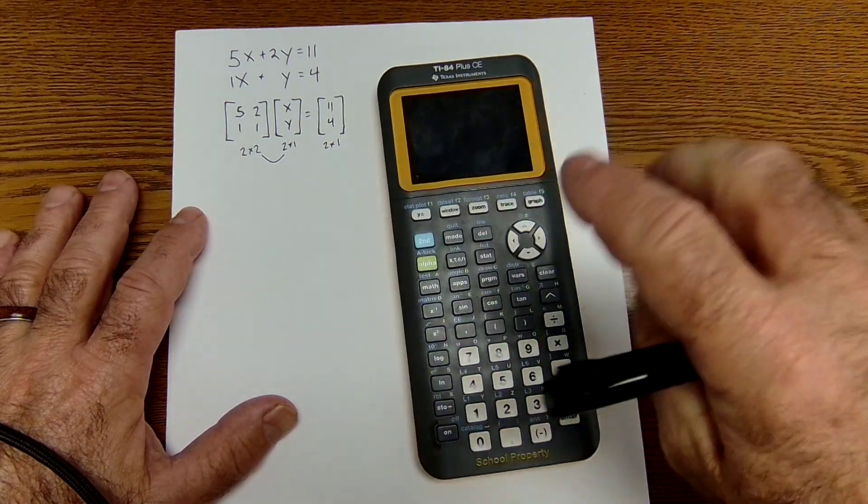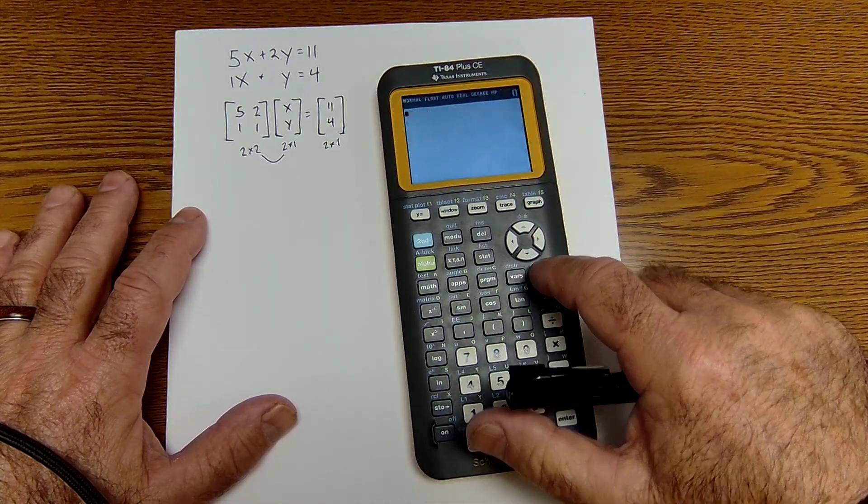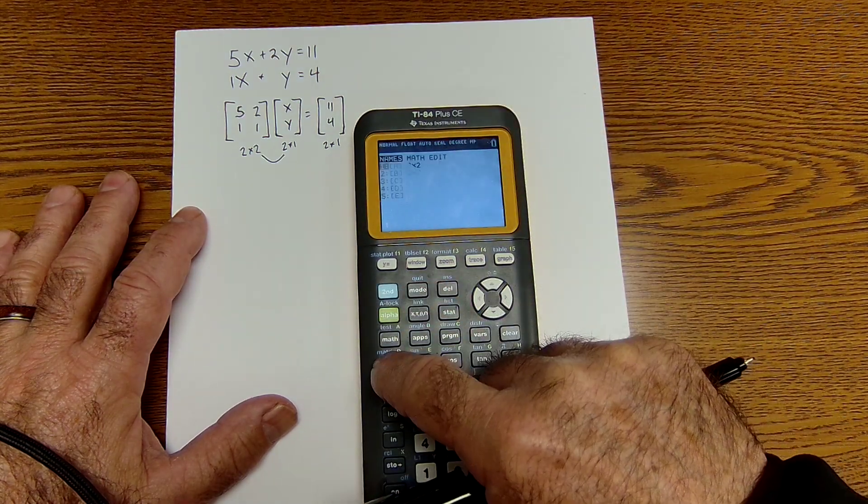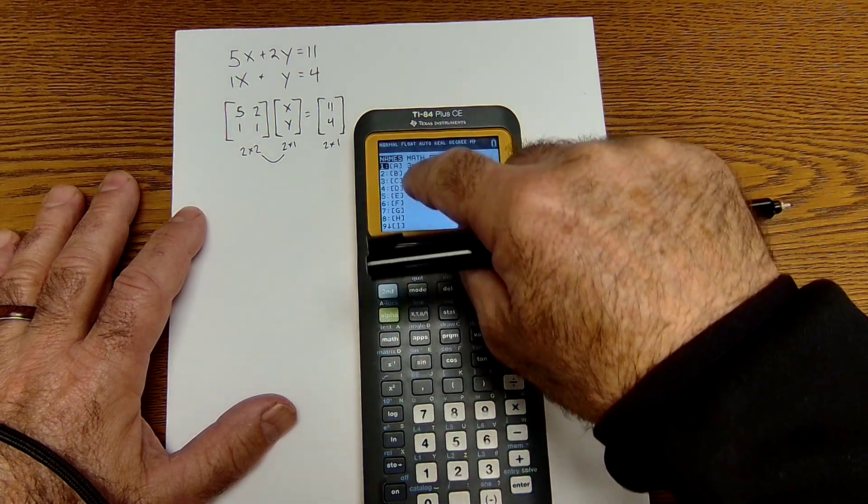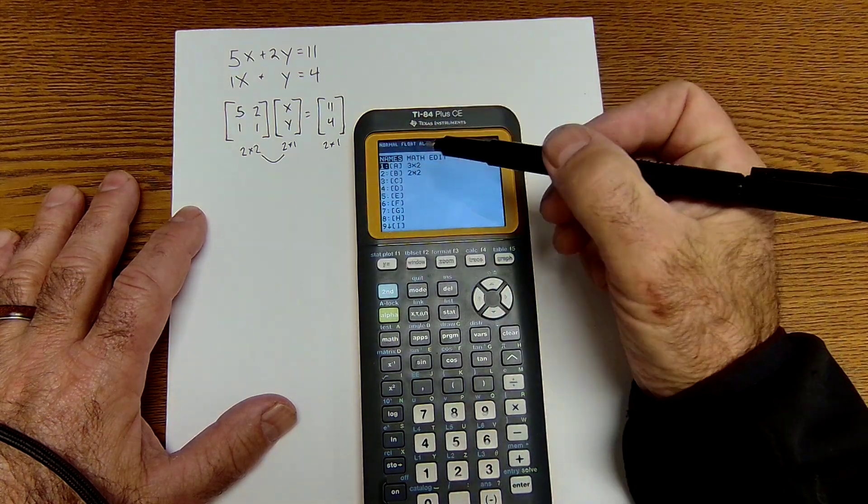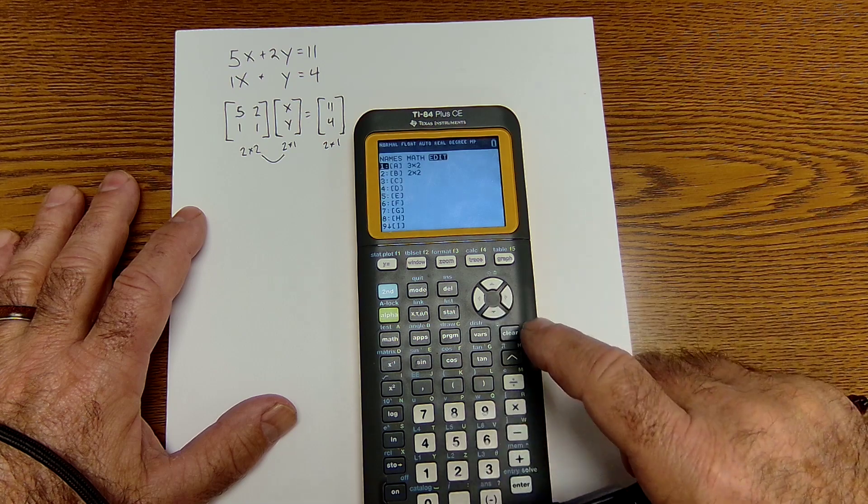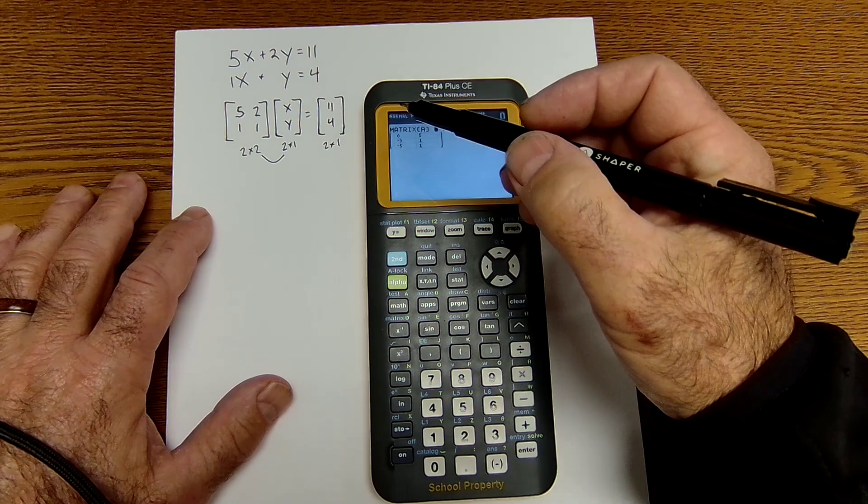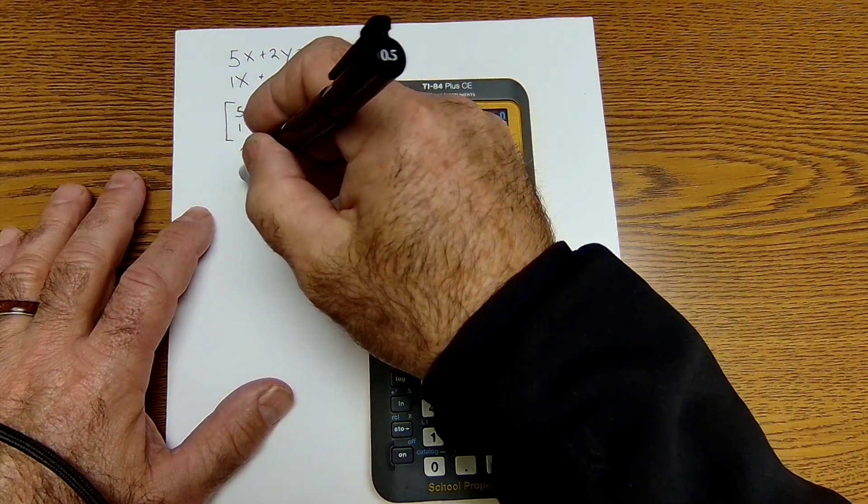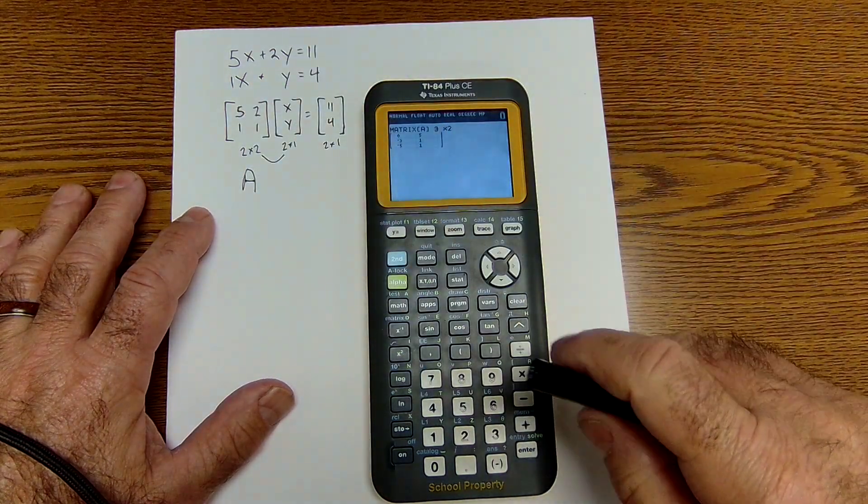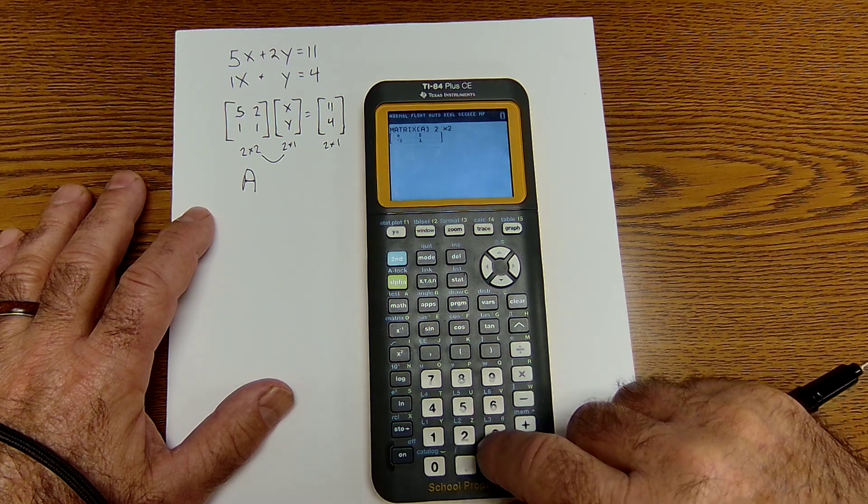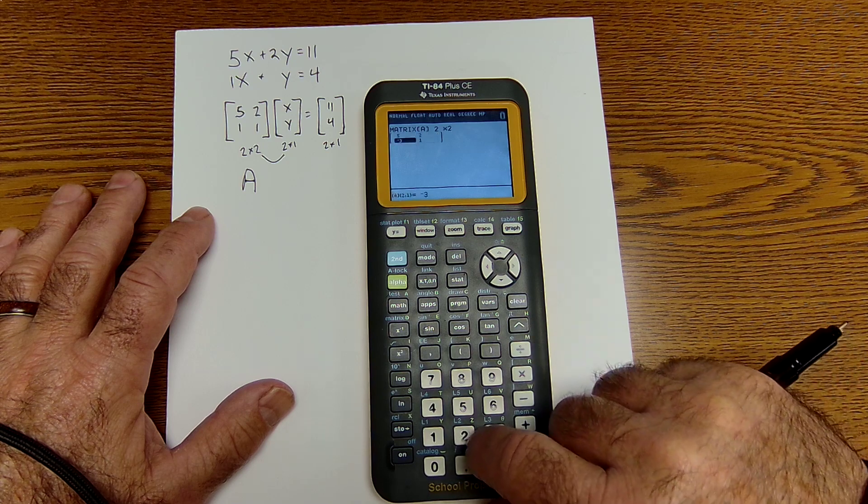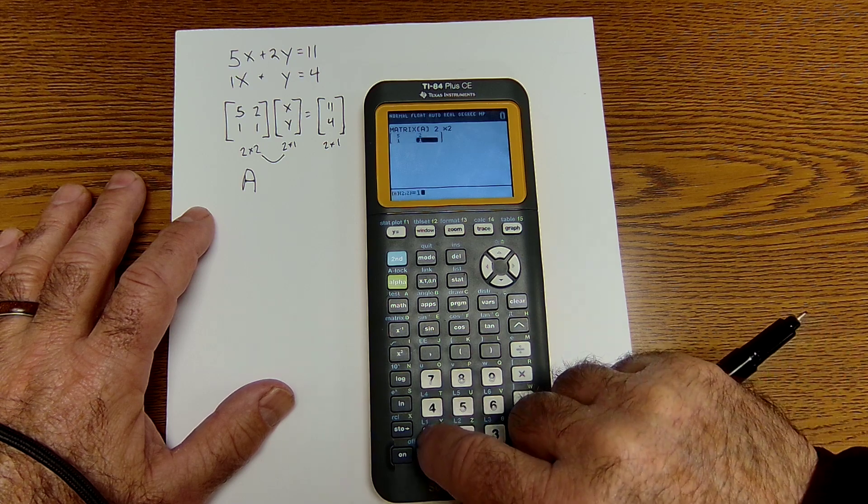On the TI-84 here, the way I enter matrices is here's the matrix button right here. So I'm going to go second matrix. I could either name the matrix, do operations on it, or edit it. So I want to edit it first. I'm going to hit enter. I'm going to edit the first matrix. I'll call this matrix A. Matrix A is going to be a 2 by 2, and the elements are 5, 2, 1, and 1.